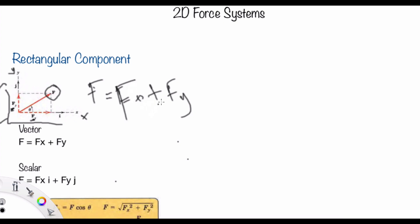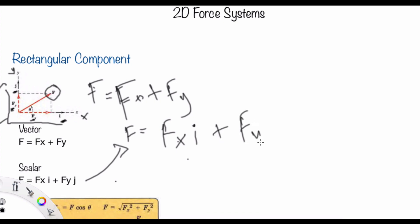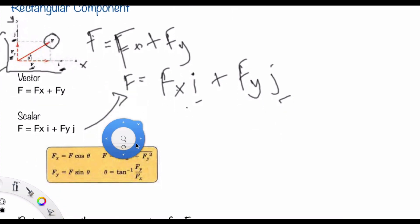Because F is the resultant of Fx and Fy, and also in terms of unit vectors we can write F as Fx times i plus Fy times j, where i and j refer to the unit factors in the x and y directions respectively.